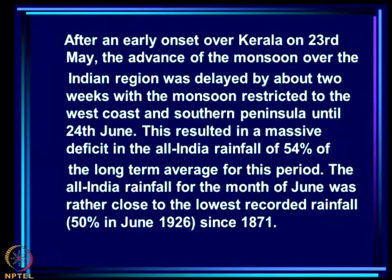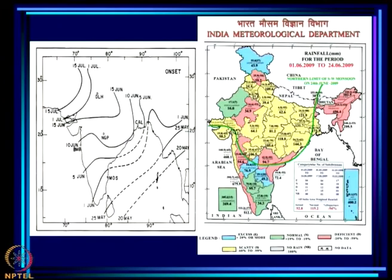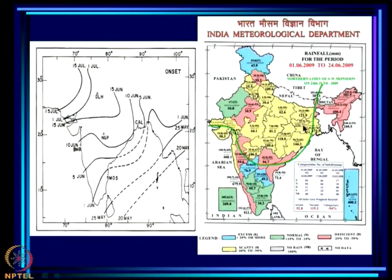What happened in June 2009 was very intriguing. After an early onset over Kerala on 23rd May, the advance of the monsoon over the Indian region was delayed by about two weeks, with the monsoon restricted to the west coast and southern peninsula until 24th of June. The mean dates show that by 15th June it should have come further north, but the northern limit of the monsoon was still in the south, causing very high rainfall deficits in all those subdivisions.